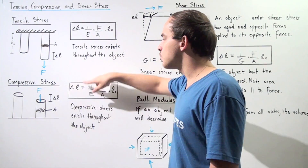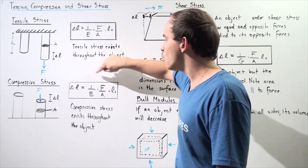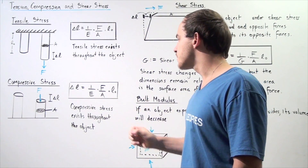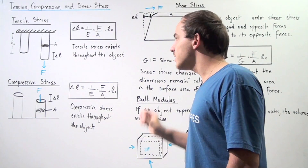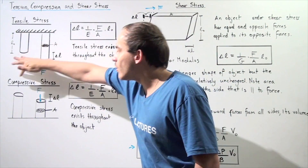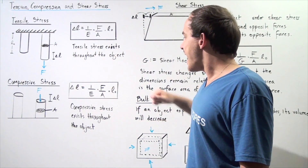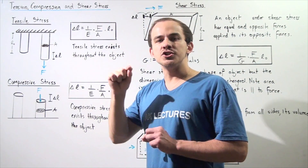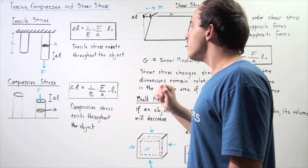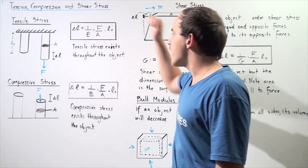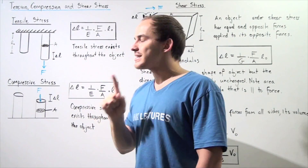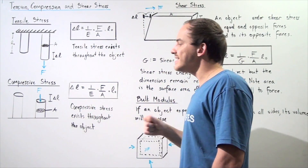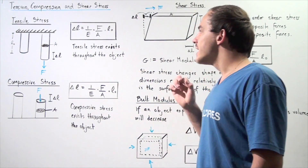The amount our object compresses in meters is equal to 1 over E, where E is the object's Young's modulus. Force divided by area is no longer tensile stress, but now it's compressive stress. This quantity remains the same — it's our L-naught, the original length of the column. In the same way that tensile stress exists throughout the entire object, so does compressive stress exist throughout the entire object.